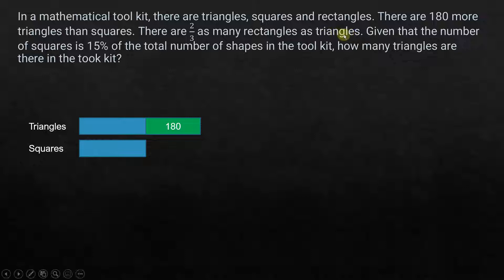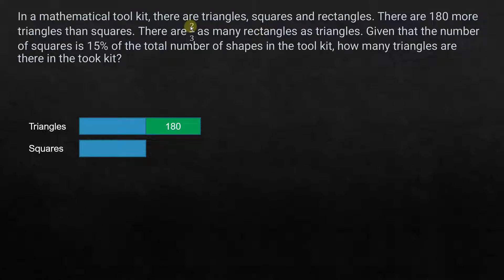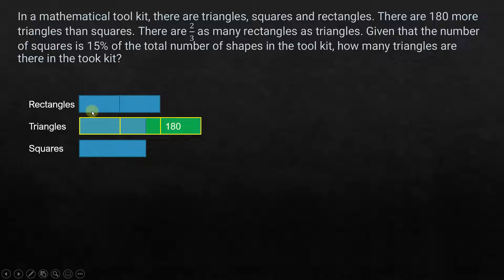Next, there are two-thirds as many rectangles as triangles — the base here is triangles. This means if the number of triangles is divided into three equal parts, the number of rectangles would equal two of those parts.